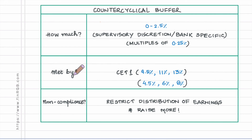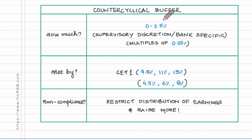As was the case with the capital conservation buffer, the counter cyclical buffer requirement is also met using core equity tier one capital. If both the capital conservation buffer and the counter cyclical buffer are simultaneously applied in full force — that means the full 2.5 percent each — the minimum ratios become 9.5 percent for core equity tier one.